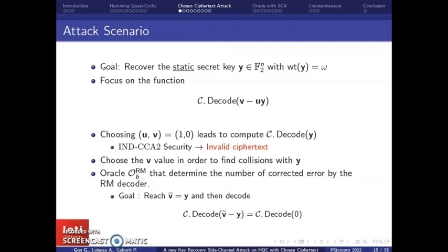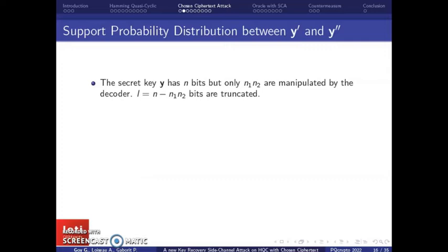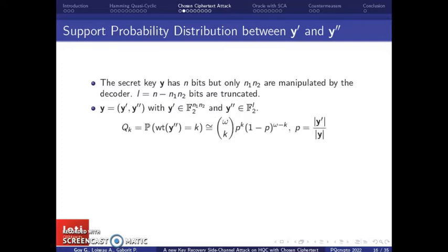The purpose of our attack is to recover the static secret key Y of HQC. As mentioned earlier, Y is the unique part of the secret key that is used in HQC. To this end, we focus on the decoding of V minus U times Y. The attack starts with an observation. If one chooses U equals to 1 and V equals to 0, given the computation is in a field of characteristic 2, this ciphertext leads to decoding the secret key Y. Given that the secret key Y has a small hamming weight, lower than the error correcting capability of the decoder, the closest word from Y is the all-zero codeword.